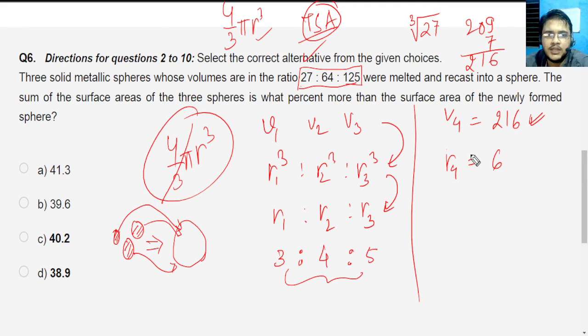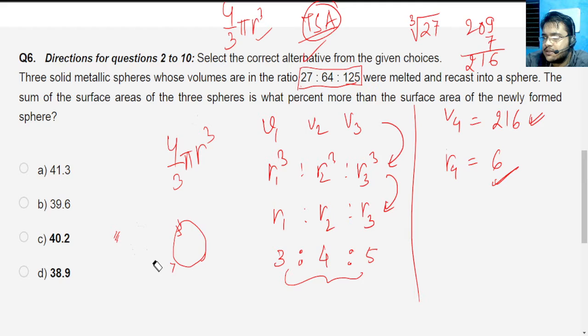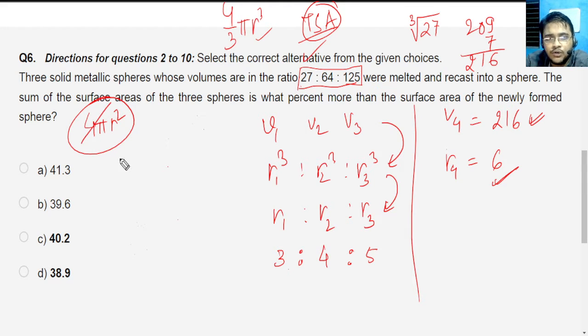Now they have asked you about the sum of the surface areas of the three small spheres - what percentage more than the surface area of the newly formed one. What is the total surface area of a sphere? That is 4πr². Again I will not consider this 4π because it's common and all of these are ratios. If I have to take the ratio, all of these are ratios.